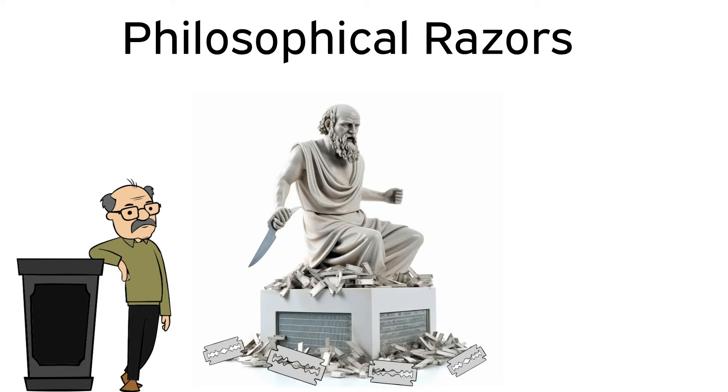A philosophical razor is essentially a principle or rule of thumb used in philosophy to guide reasoning and argumentation, specifically in the context of parsimony or simplicity. It is often employed to determine the most likely or plausible explanation among competing hypotheses or theories. The main idea behind a philosophical razor is to favor the simplest explanation that adequately accounts for the available evidence rather than resorting to unnecessary complexity or assumptions.